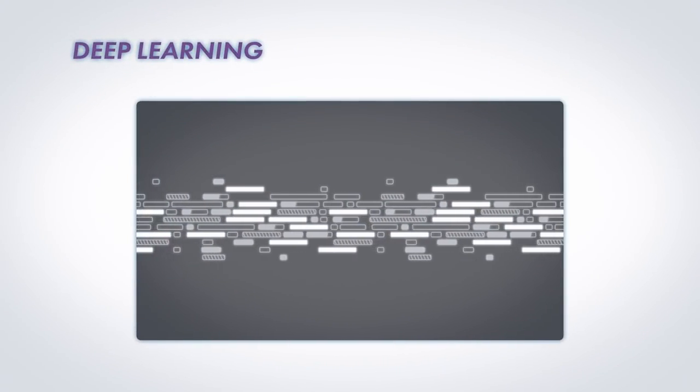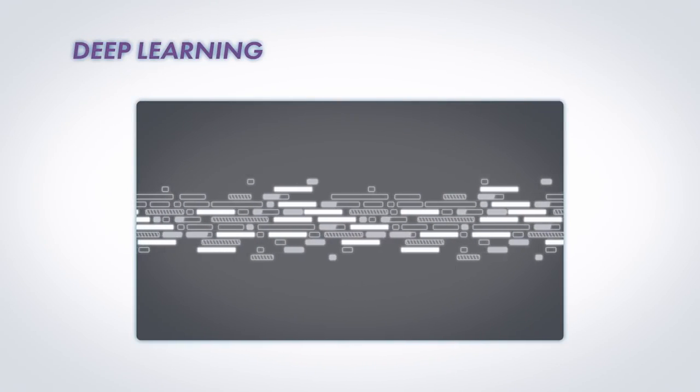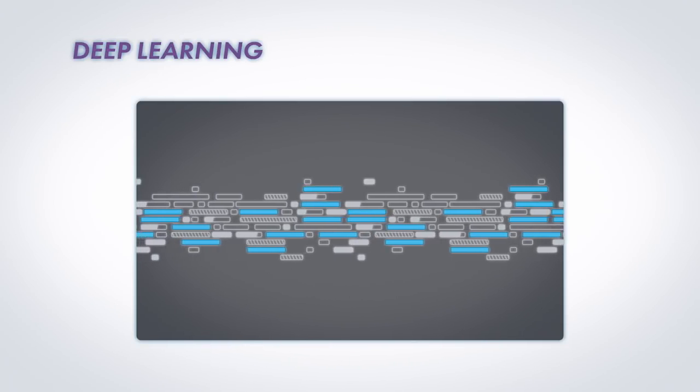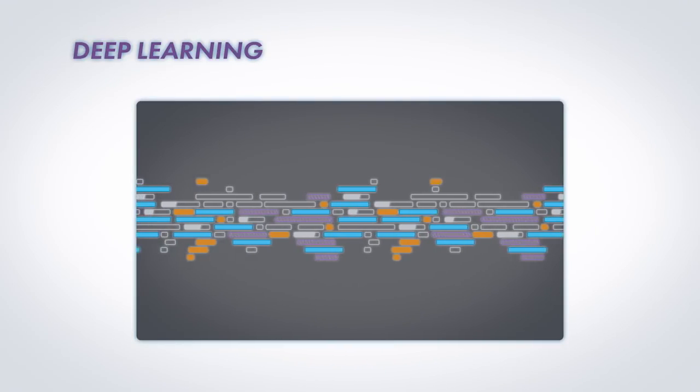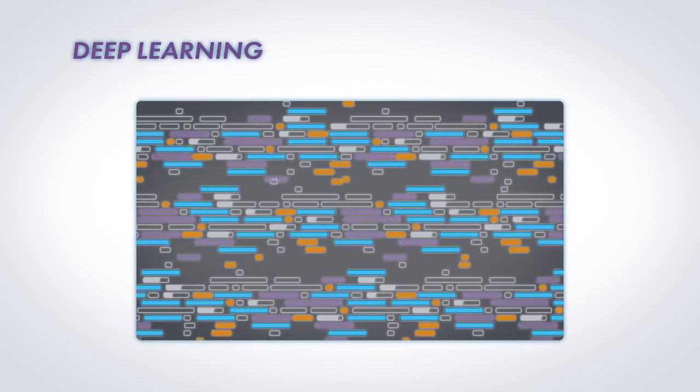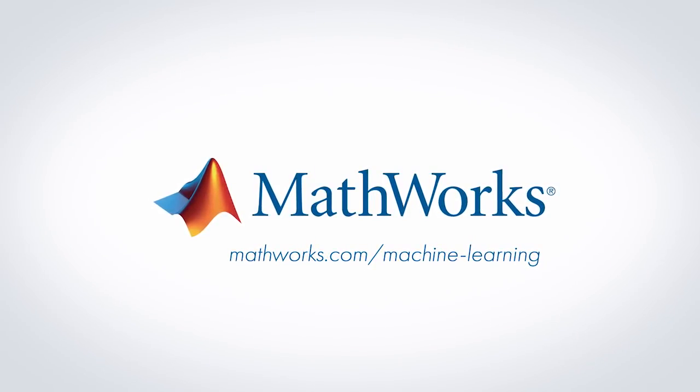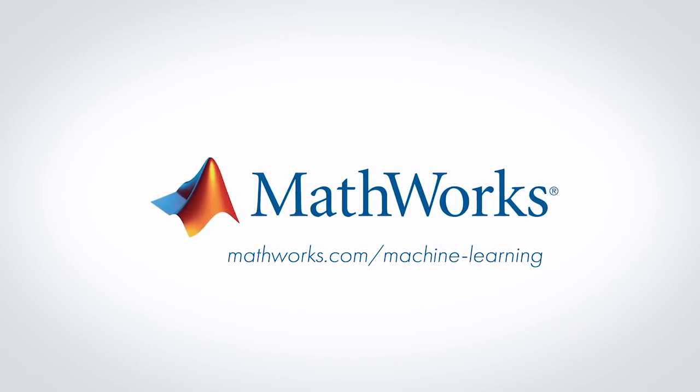You may have heard of deep learning, which is a type of machine learning where you don't manually select the features. Instead, the features are learned as part of the model training process, but it costs you lots more data. For more practical information and inspiration, start with the links below.